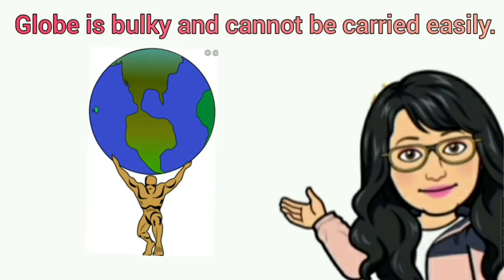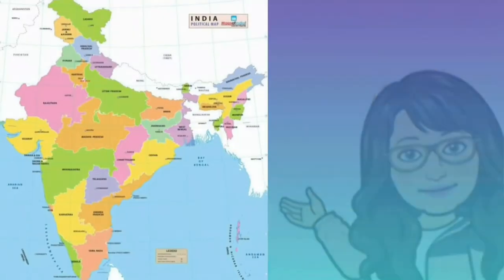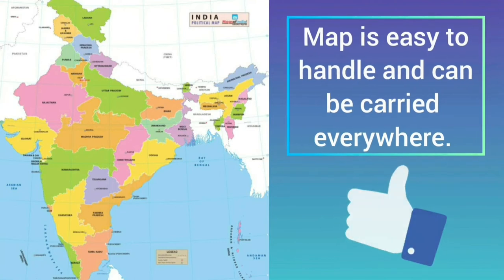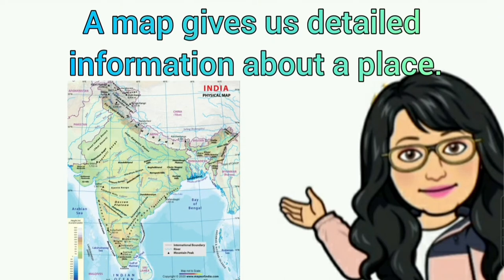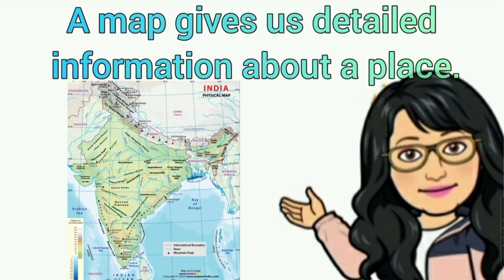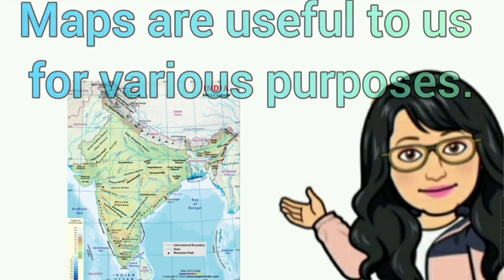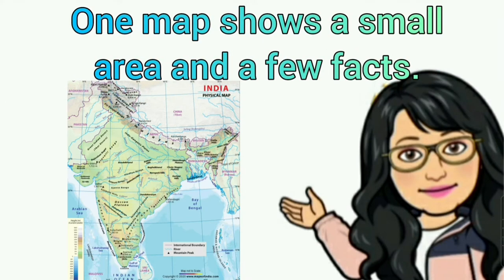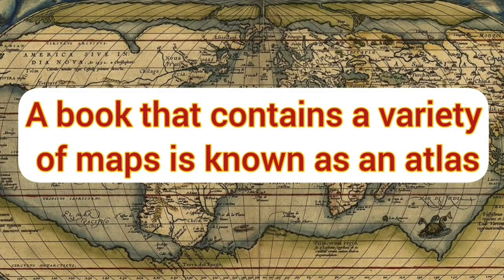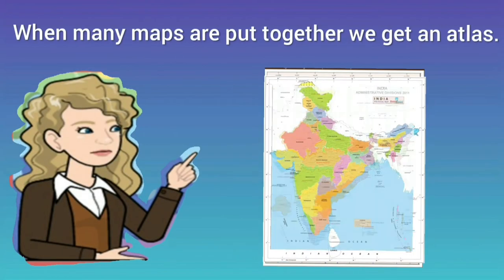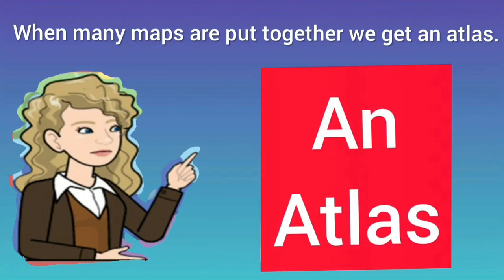A map is different from a globe in many ways. First, a globe is bulky and cannot be carried easily, whereas a map is easy to handle and can be carried everywhere. Second, a globe cannot show the details of landforms or the location of small towns and villages, whereas a map gives us detailed information about a place. A book that contains a variety of maps is known as an atlas — when many maps are put together, we get an atlas.